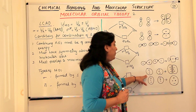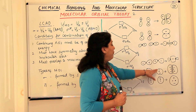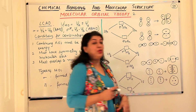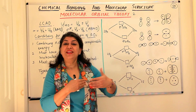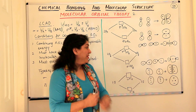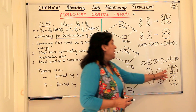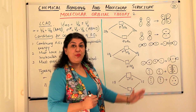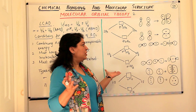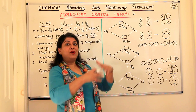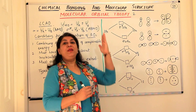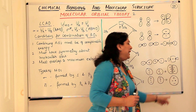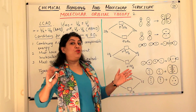But when the anti-bonding molecular orbital is formed, the positive side falls over the negative and the negative side over the positive—so the interference is destructive. As a result, between the two nuclei you have a nodal plane. The line in between is a nodal plane—there are no electrons present here, and there is zero probability of finding electrons between these two nuclei.